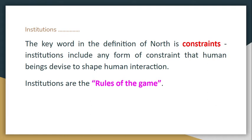In North's definition, the key word is constraints — humanly devised constraints. These constraints are institutions. Institutions include any form of constraint, and these institutions constrain human beings. In order to shape human interaction, there are several forms of constraints that human beings devise. In short, institutions are the rules of the game.